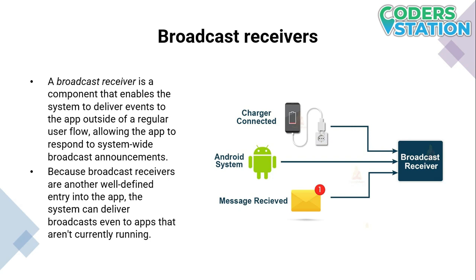If you want the system to deliver events to the app outside of a regular user flow, allowing the app to respond to system broadcast announcements, Broadcast Receivers are another well-defined entry point into the app. The system can deliver broadcasts even to apps that aren't currently running. For example, an app can schedule an alarm to post a notification about an upcoming event by delivering the alarm to a broadcast receiver — there is no need for the app to remain running until the alarm goes off. Many broadcasts originate from the system, such as a broadcast announcing that the screen has turned off, the battery is low, or a picture was captured.